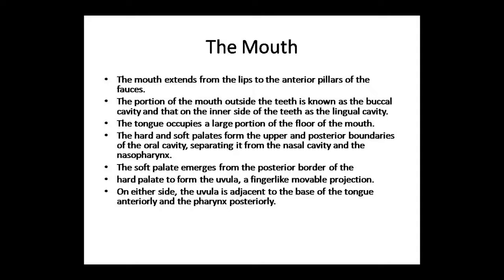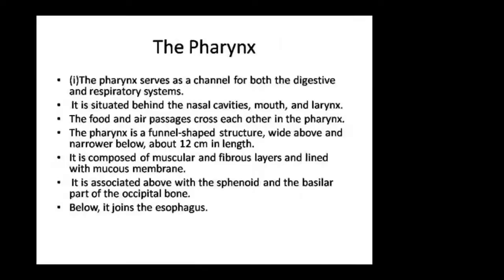On either side, the uvula is adjacent to the base of the tongue. The oral cavity is bounded anteriorly by the base of the tongue and posteriorly by the pharynx. The soft palate, made of finger-like movable projections, and the hard palate together form the upper boundary. The uvula is attached and positioned anteriorly, with the pharynx lying posteriorly.